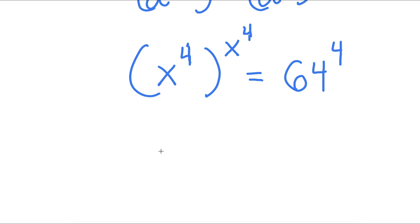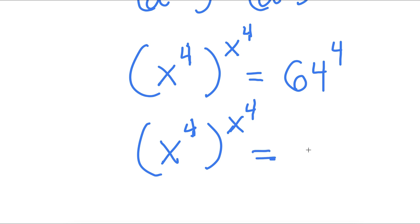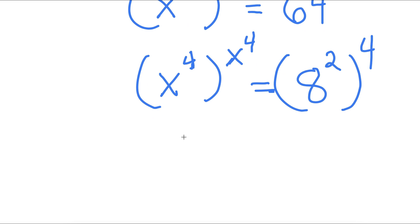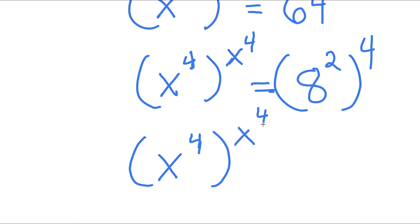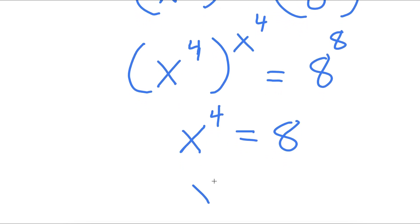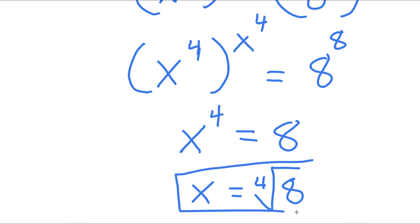Now 64 I can rewrite as 8 squared. So now I have x to the power of 4 to the power of x to the power of 4 equals 8 squared to the power of 4. And 8 squared to the power of 4 is the same as 8 to the power of 2 times 4, which is 8 to the power of 8. So x to the power of 4 to the power of x to the power of 4 equals 8 to the power of 8, meaning x to the power of 4 equals 8, and x equals the fourth root of 8.